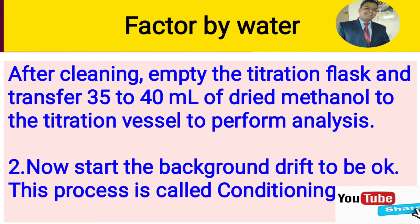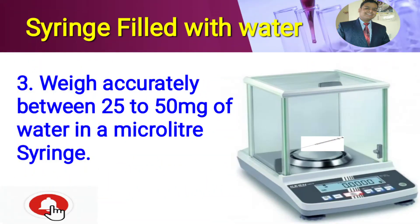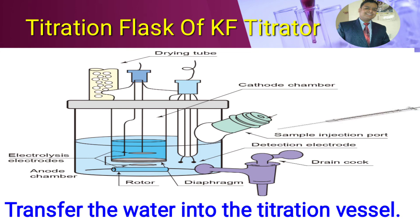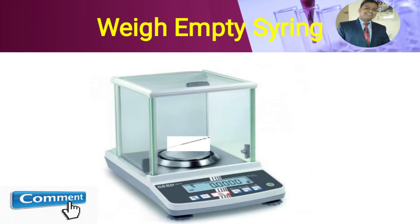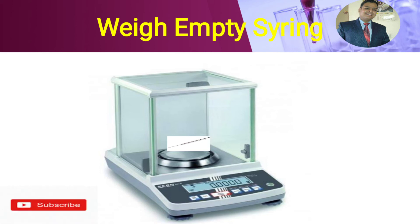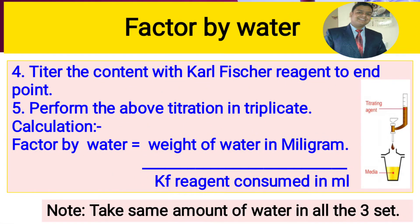Now take 25 to 50 mg of water in a microliter syringe and after taking it, weigh the syringe on the analytical balance. Then introduce the sample inside the titration flask. After that, take the weight of the empty syringe, and by subtracting the weight of the empty syringe from the filled syringe, we will get how much amount of water was introduced inside the titration flask. Start the titration and wait for the result. The same analysis should be done in triplicate.